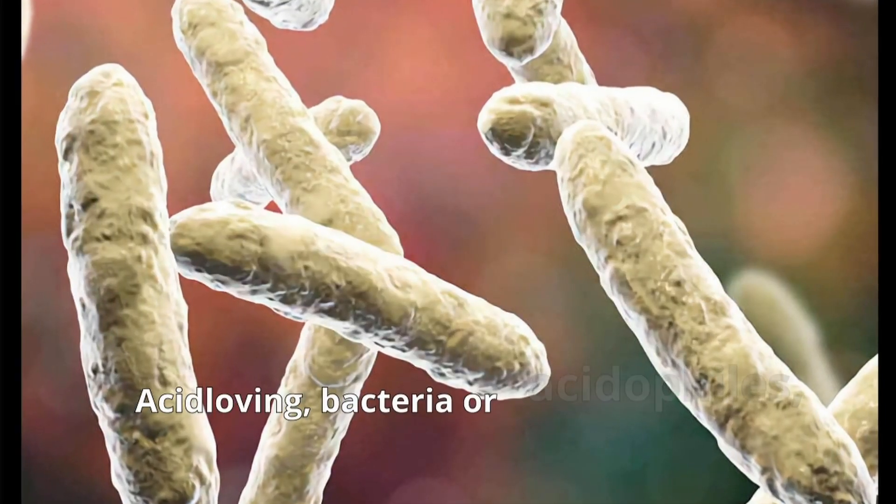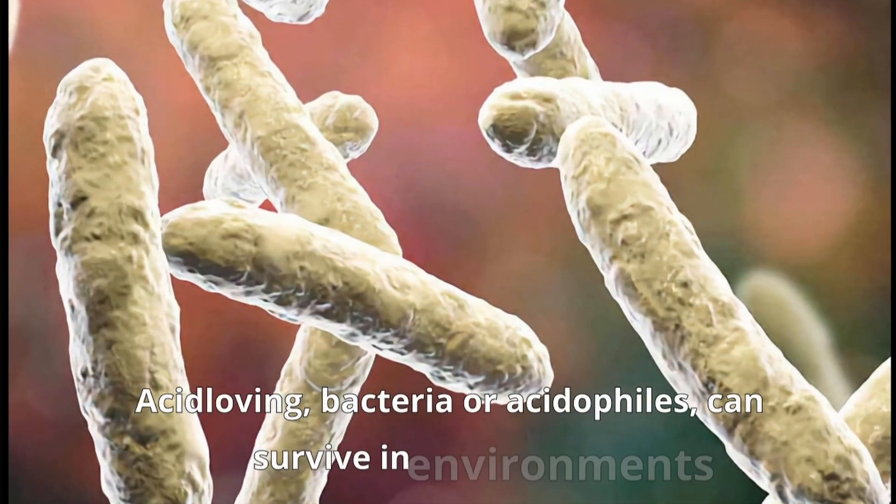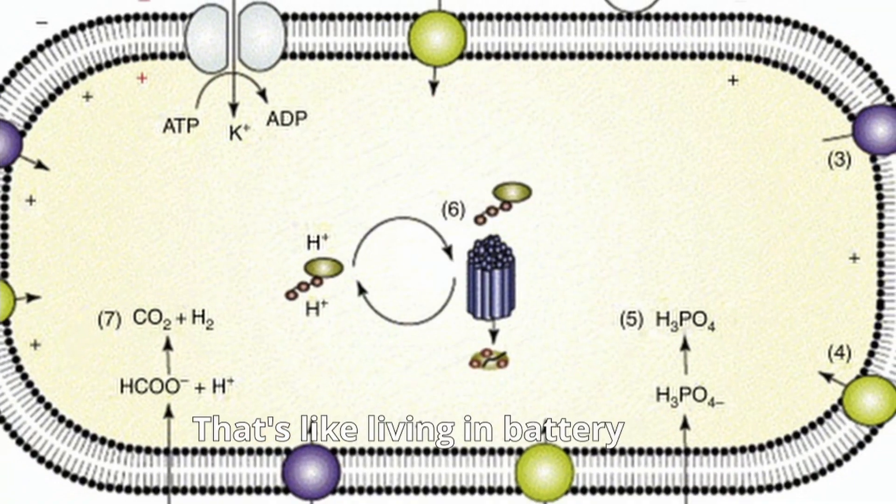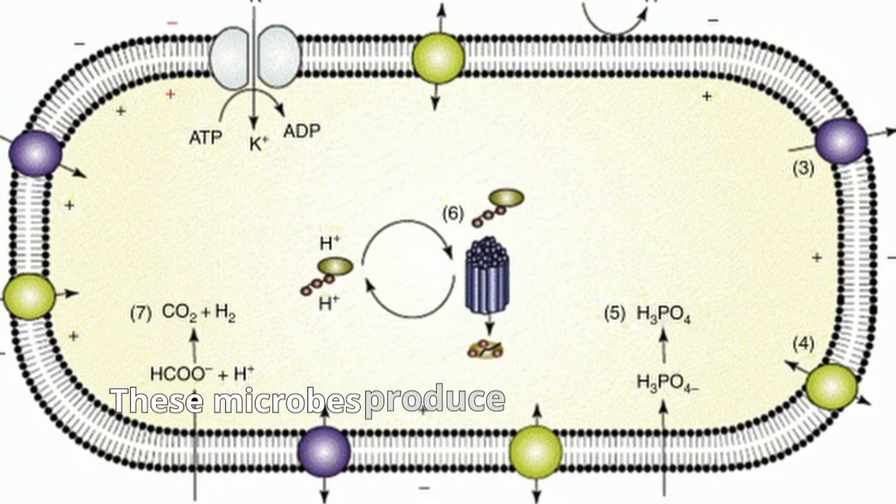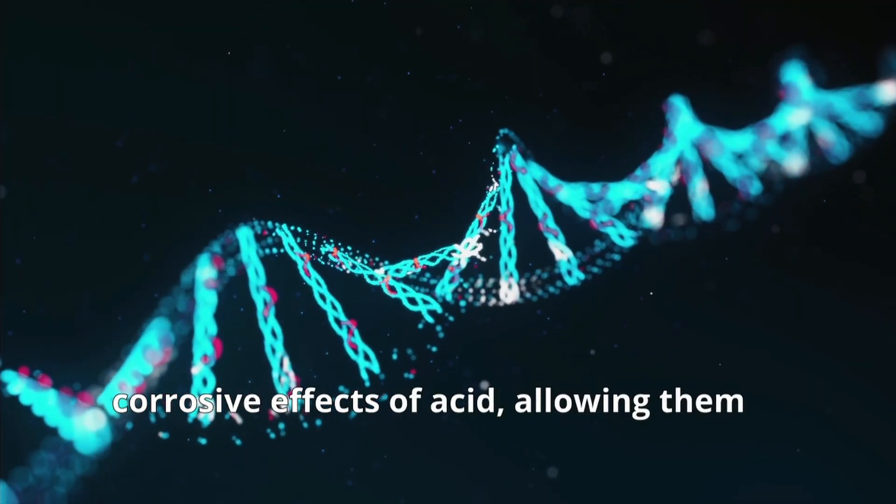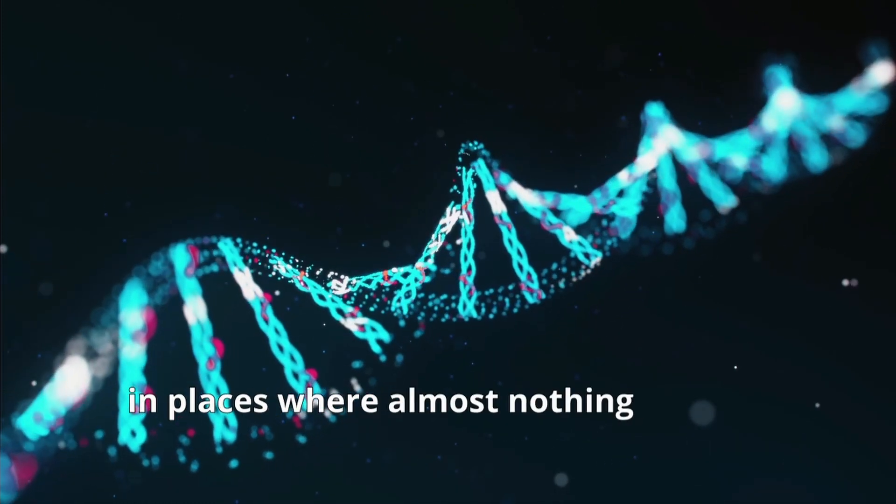Acid-loving bacteria, or acidophiles, can survive in environments with a pH of zero or lower. That's like living in battery acid. These microbes produce proteins that can withstand the corrosive effects of acid, allowing them to thrive in places where almost nothing else can grow.